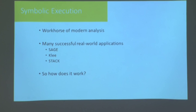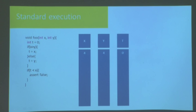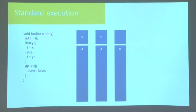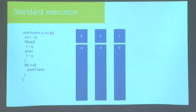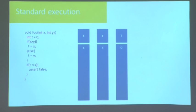To understand how symbolic execution works, it's useful to start by looking at normal execution as a generalization. I'm going to use a very simple program as an illustration. What we have is a very simple piece of code, just a couple of branches, and here we have an assertion — assert false. We want to know: could that assertion ever be triggered? Is there some input that will make that assertion fail?